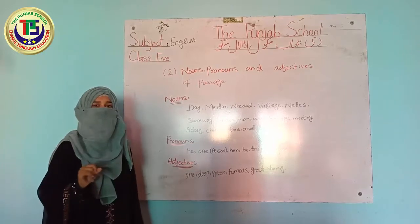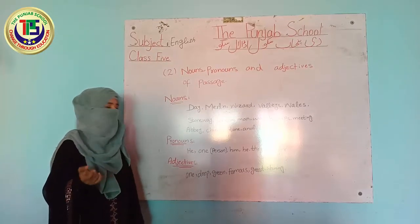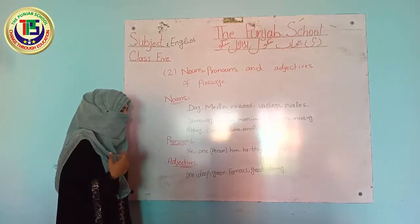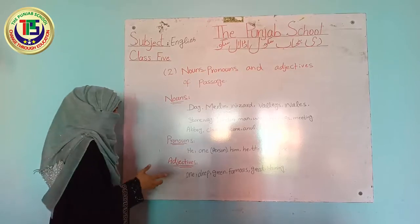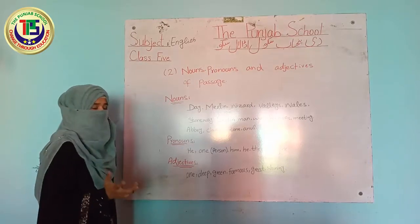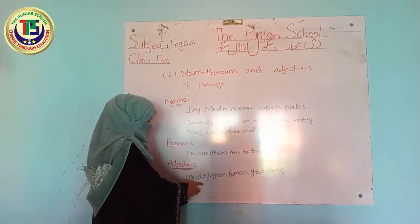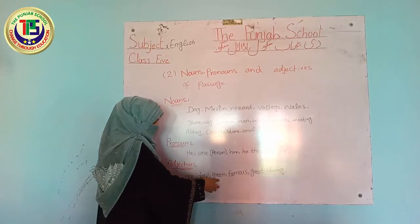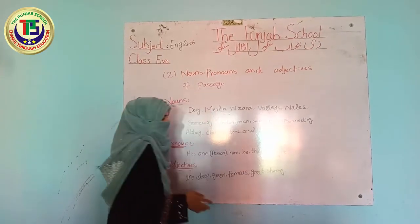Next, we have to find the adjectives in the passage. The adjectives used in this passage are: one, deep, green, famous, great, shining.